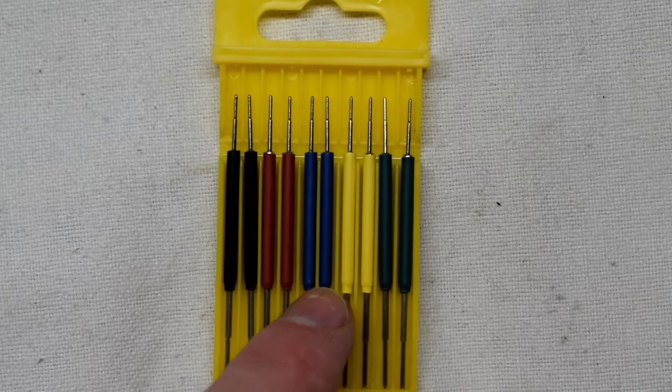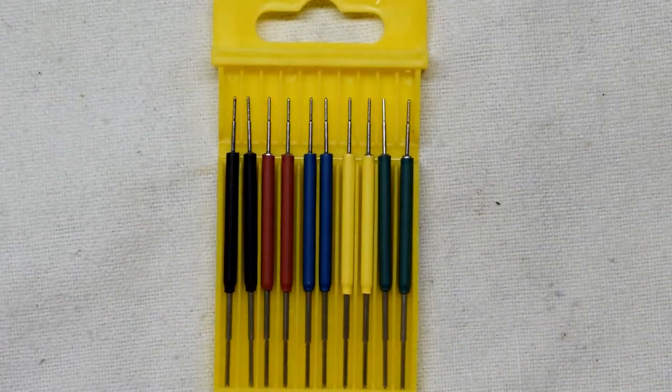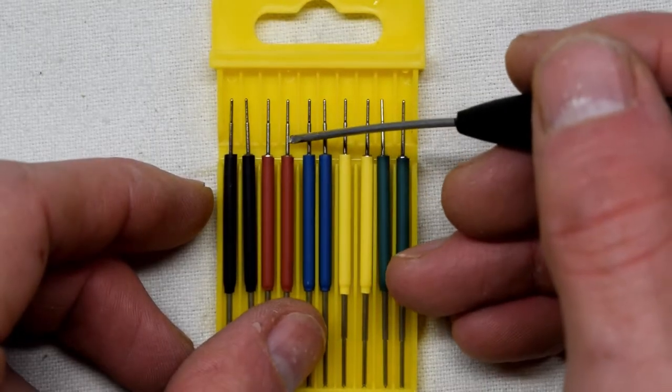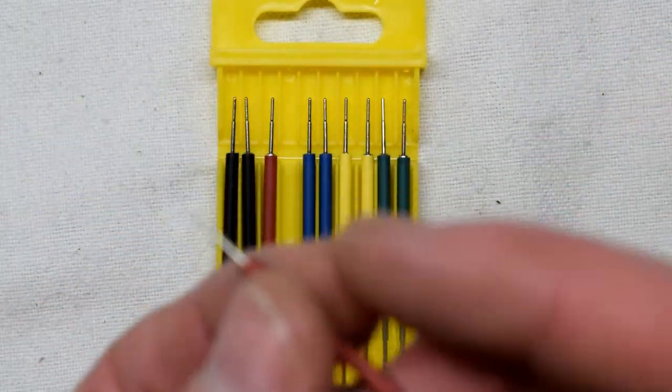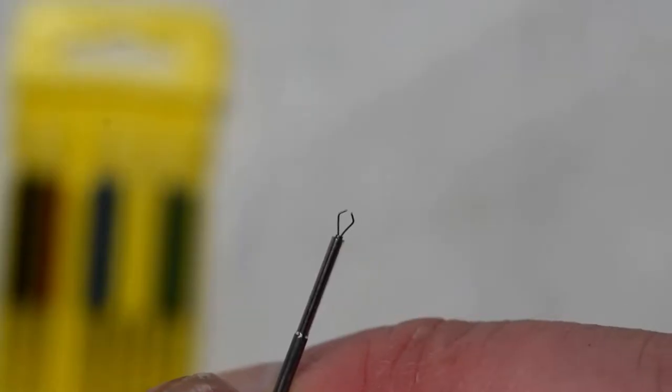We have two black, two red, two blue, two yellow, and two green, which is really nice because sometimes you want positive or negative for the power. Here it is on my hand and you can see it.